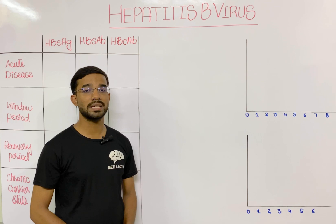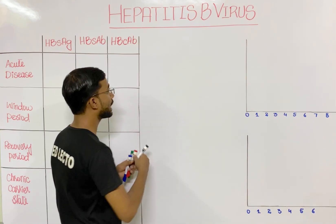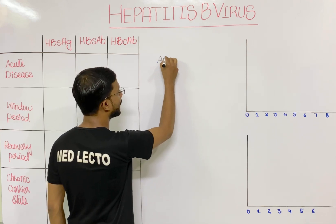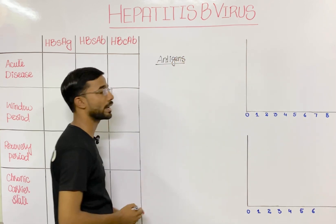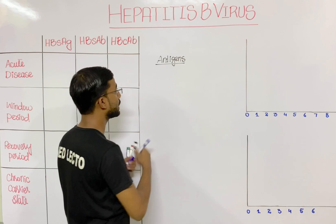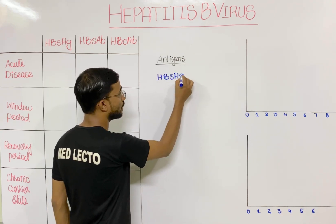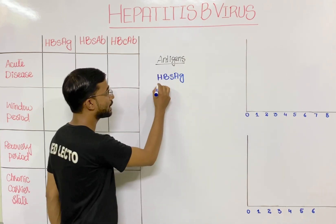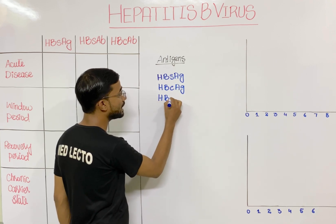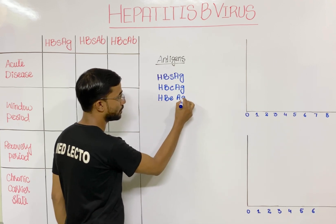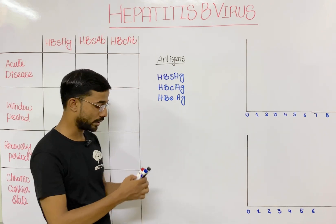First of all, we will look at the important antigens of the Hepatitis B virus. Hepatitis B virus has three most important antigens: the Hepatitis B surface antigen, the Hepatitis B core antigen, and the Hepatitis B e antigen.